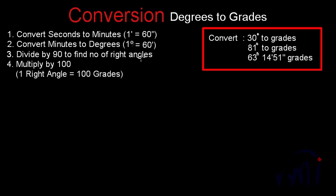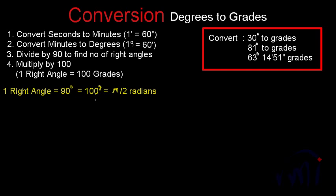The key relation to remember is: one right angle equals 90 degrees, which is also equal to 100 grades, and which is also equal to π/2 radians. If we remember this relation, we can convert angles from any unit to any other given unit.